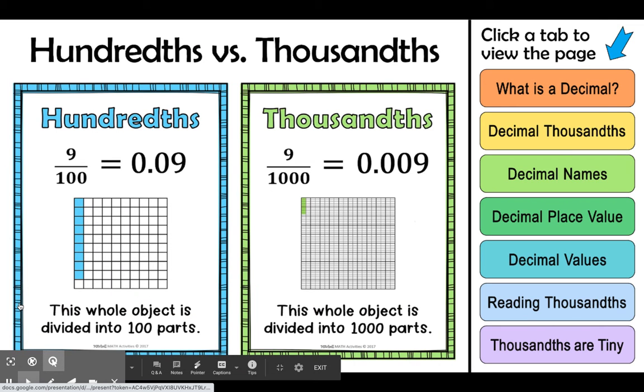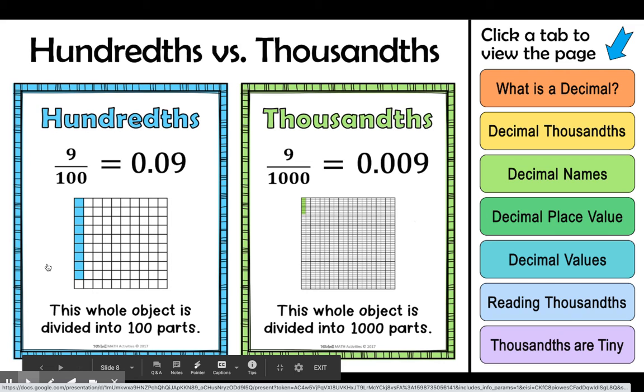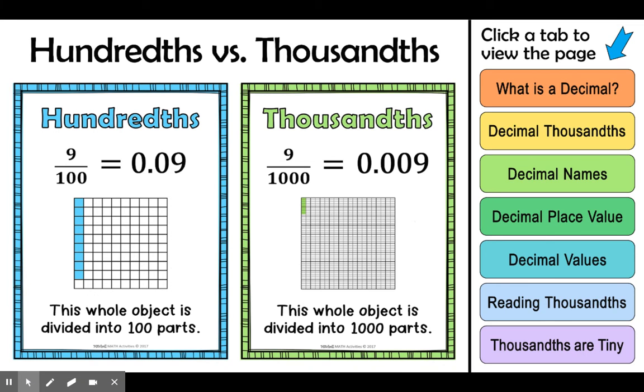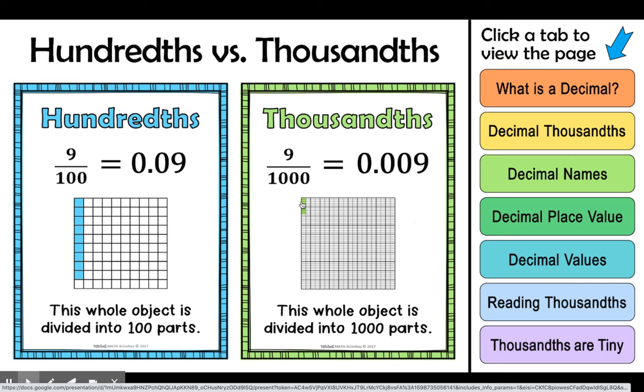So here we have two models, our hundredths model and our thousandths model. And this is just to try to bring your attention to the fact that each of our thousandths is one-tenth the size of one hundredth. Thousandths are tiny, tiny, tiny little pieces. So this whole here has been divided into a hundred equal pieces. And this whole here has been divided into a thousand equal pieces.